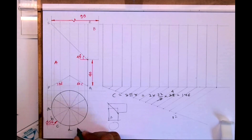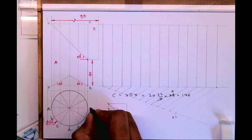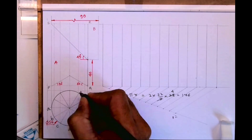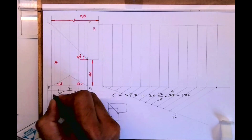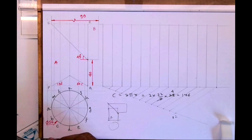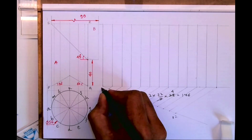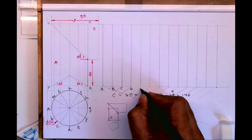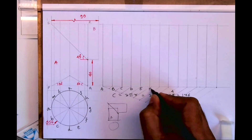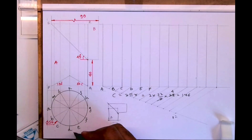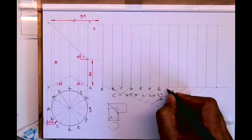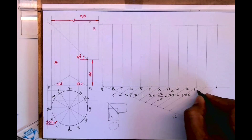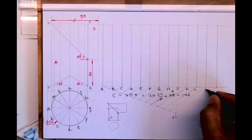I'm writing A, B, C, D, E, F, G, H — and I'm not writing I, I'm writing J, K, L, M. If you know why I'm not writing I, please let me know in the comment box.